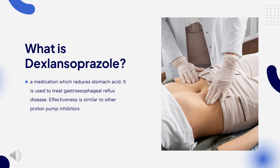Common side effects include diarrhea, abdominal pain, and nausea. Dexlansoprazole was approved for medical use in the United States in 2009, and in Canada in 2016. It was the most expensive PPI available. In 2020, it was the 263rd most commonly prescribed medication in the United States, with more than 1 million prescriptions.